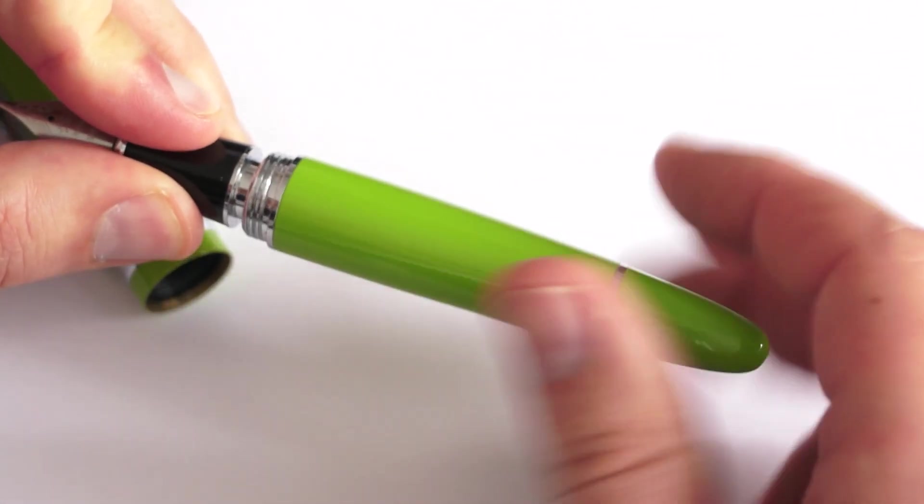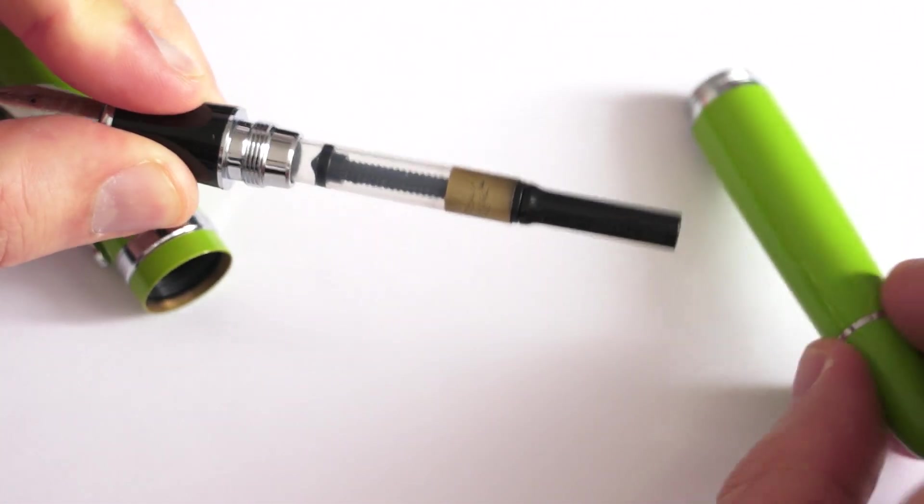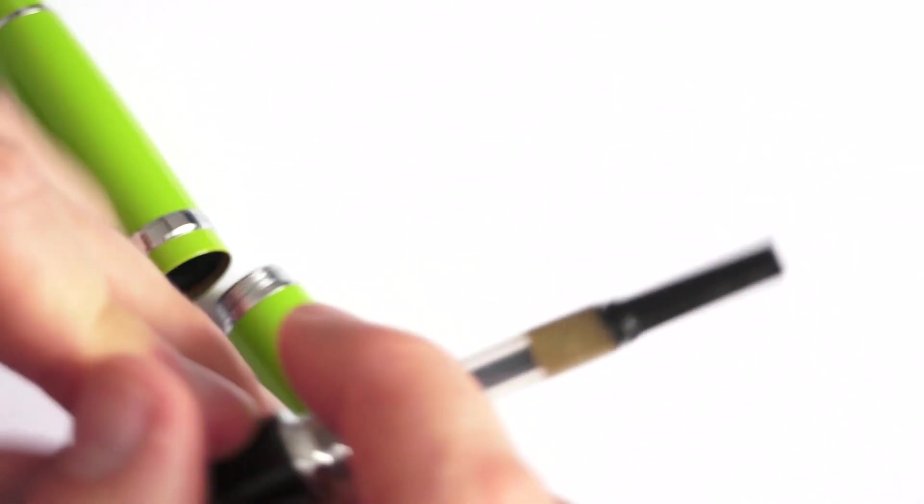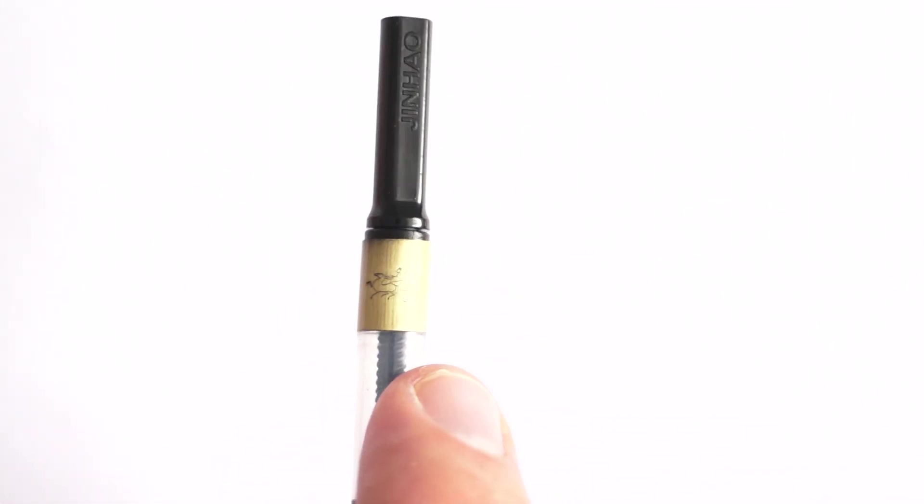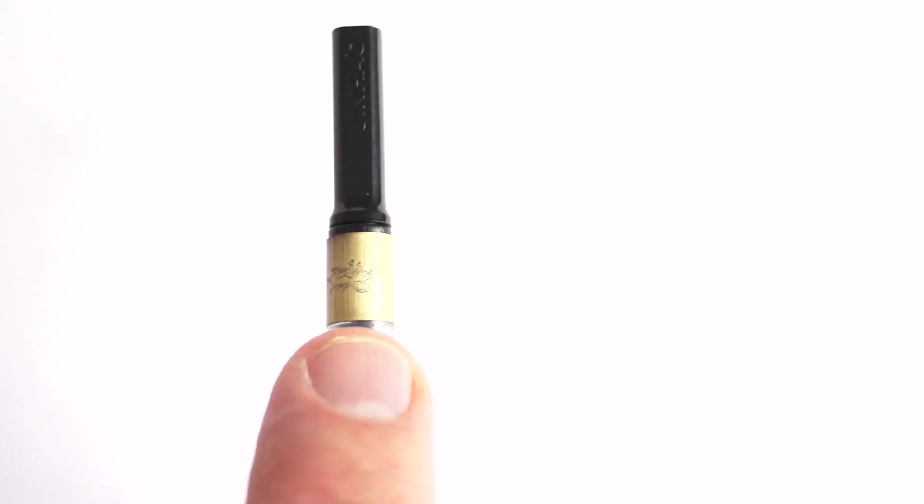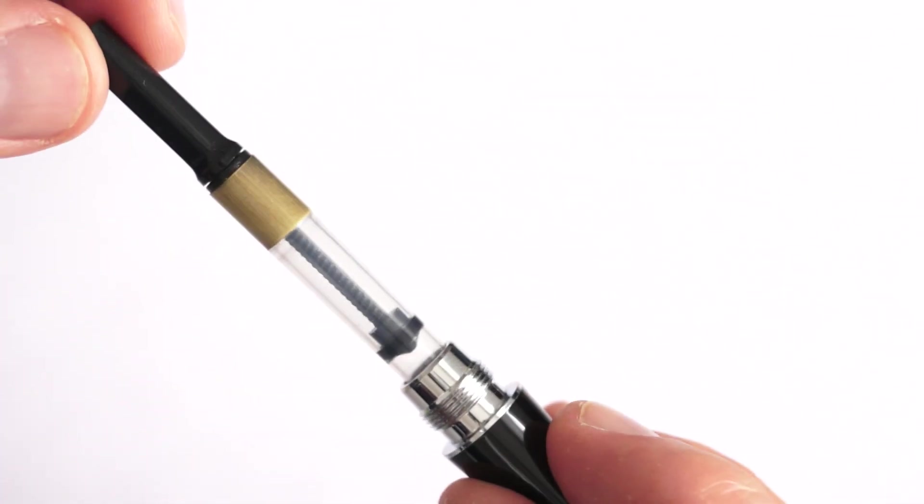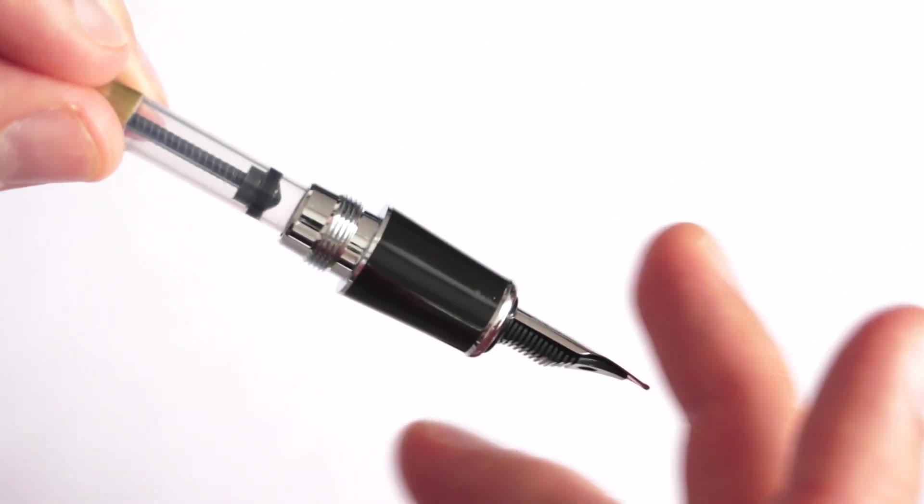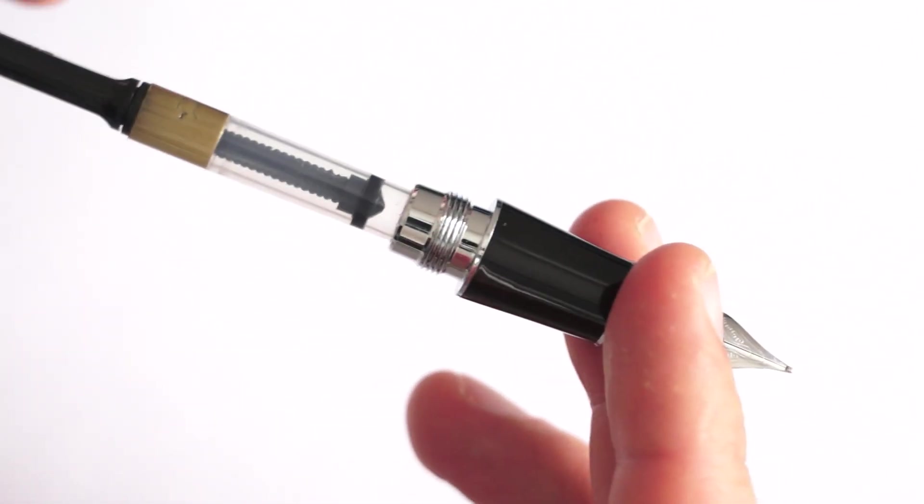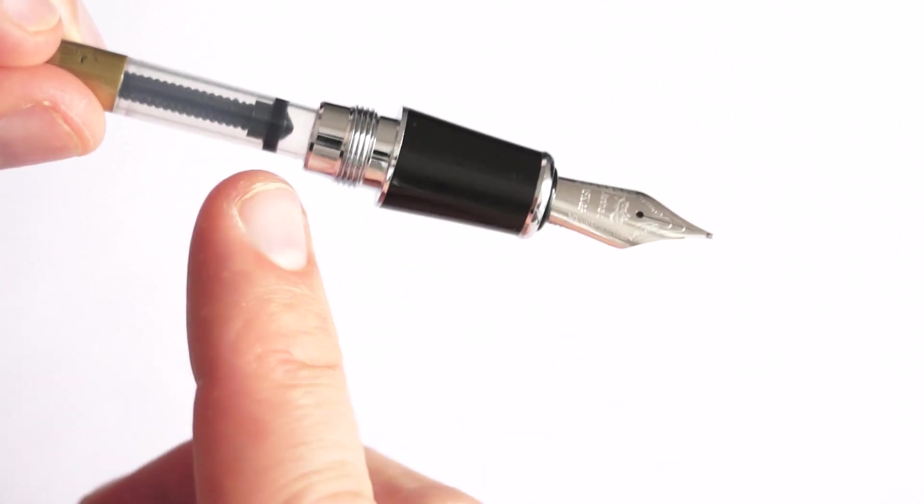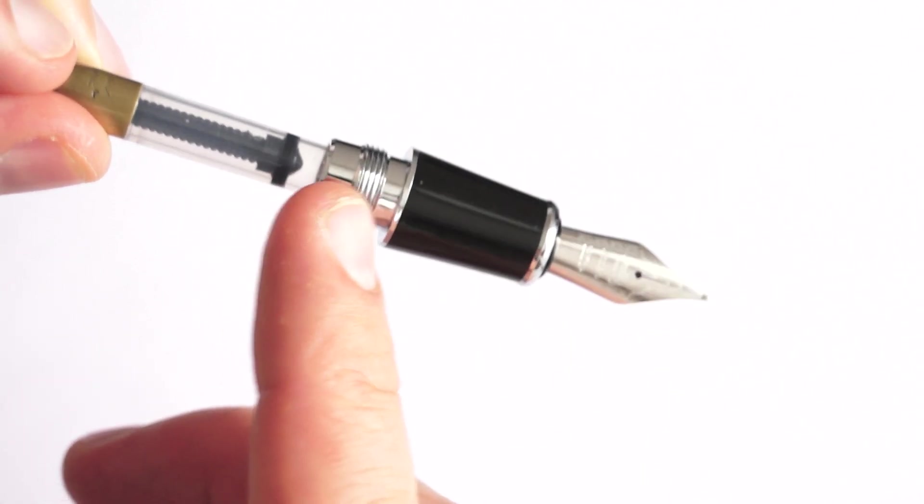If you unscrew the barrel from the section, you will have the Jinhao converter. These Jinhao converters can be also purchased separately. This is maybe a top model of converter from Jinhao, a little bit sturdier, not so flimsy made like the other one. So in principle I would say they put more effort into this pen in general than maybe the other models like X450. The threads on the section to the barrel are metallic.